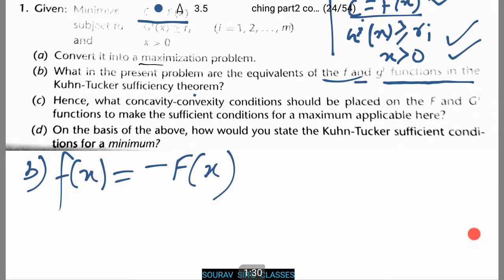In the second case, the answers are fx equals to minus fx. That is, the equivalence of f in the present function or the given function is fx equals to minus fx. And for g, it comes to g to power ix equals to minus g to power ix.